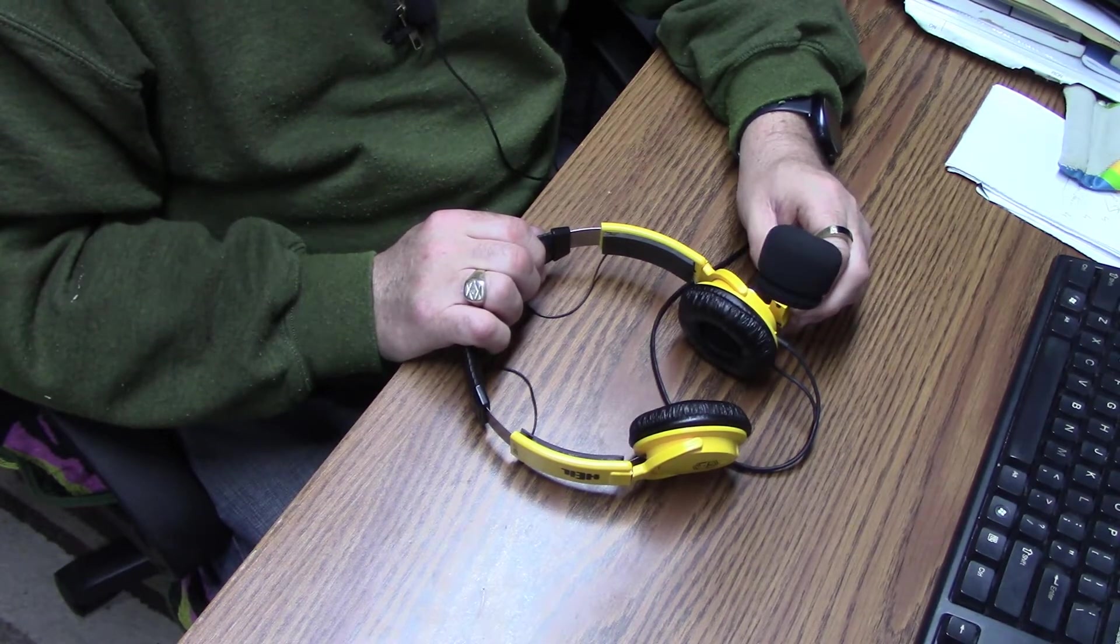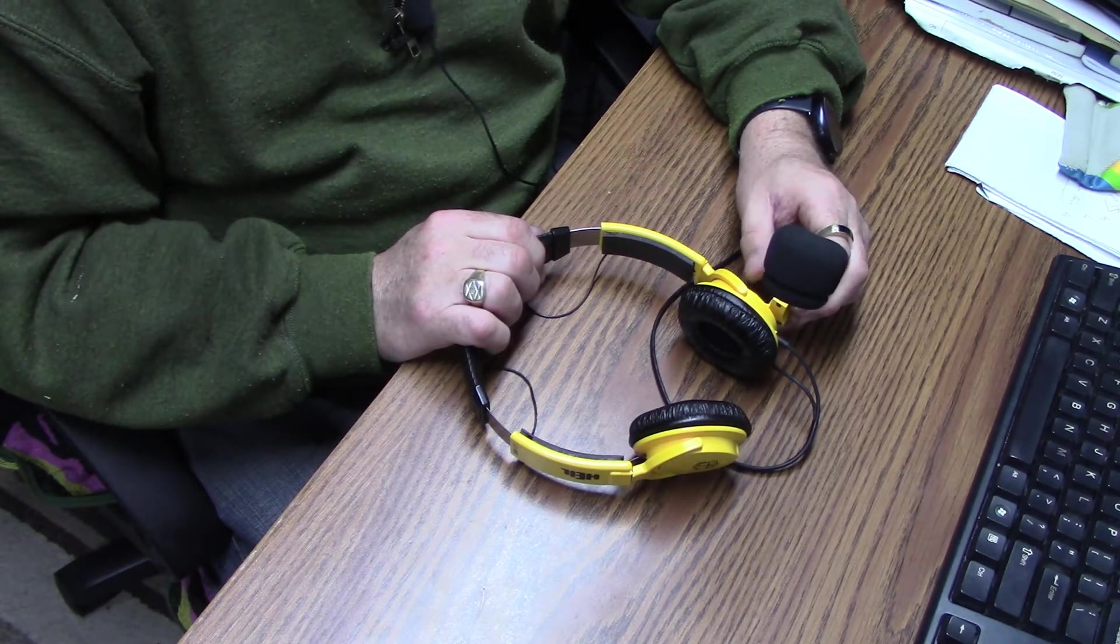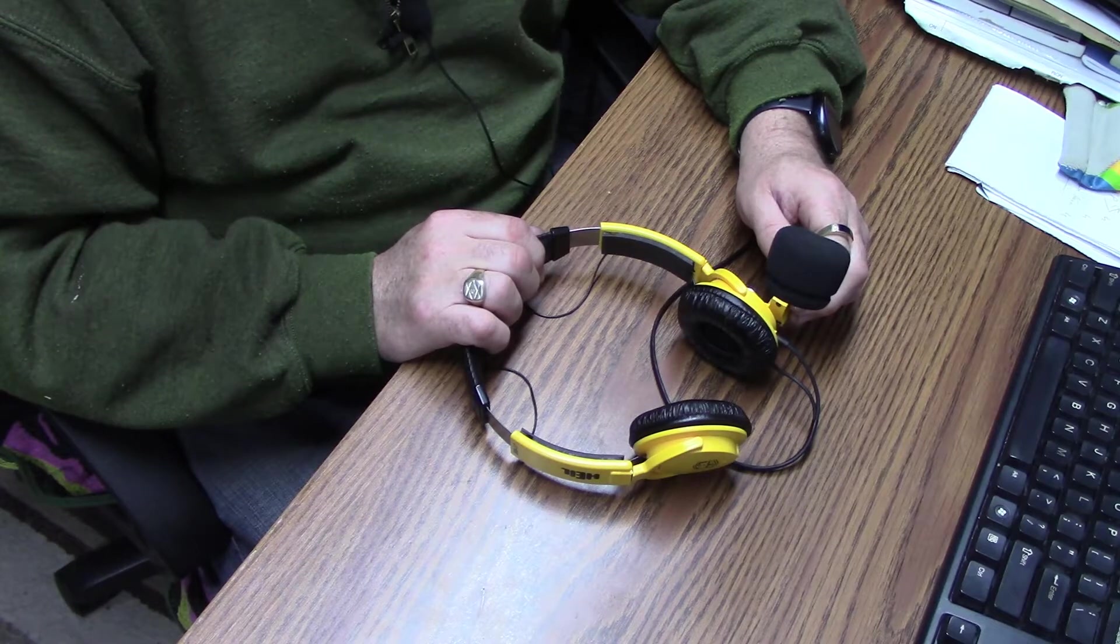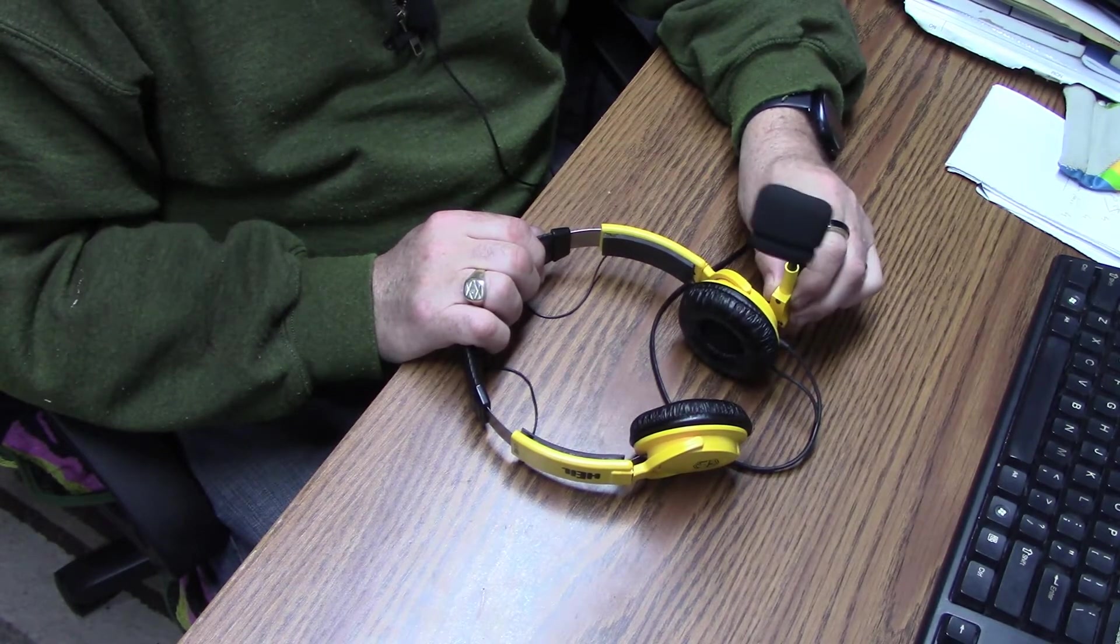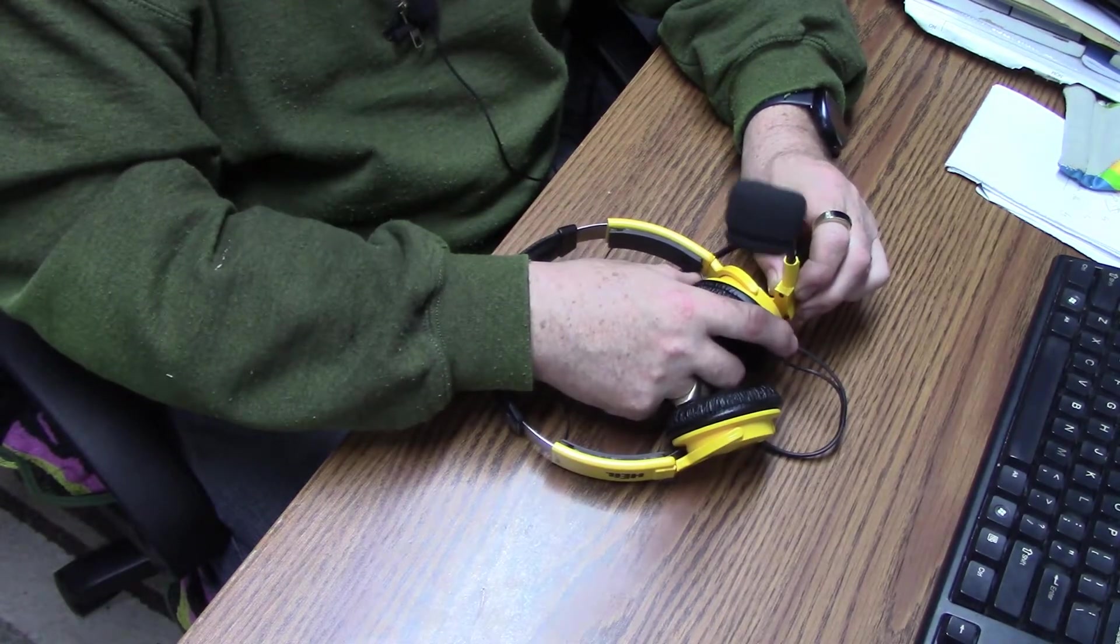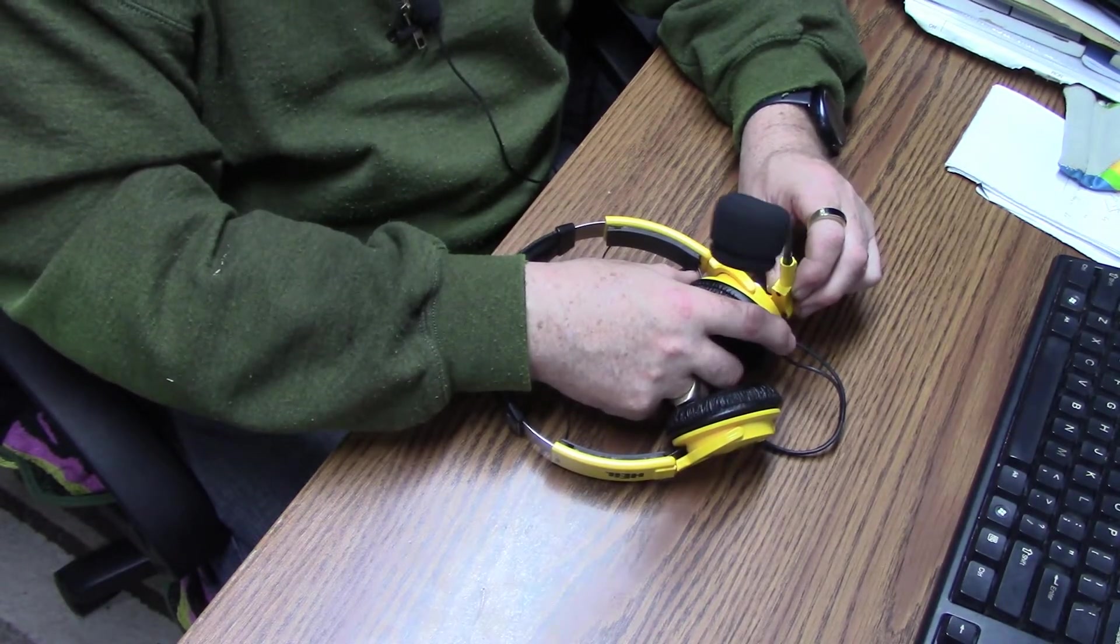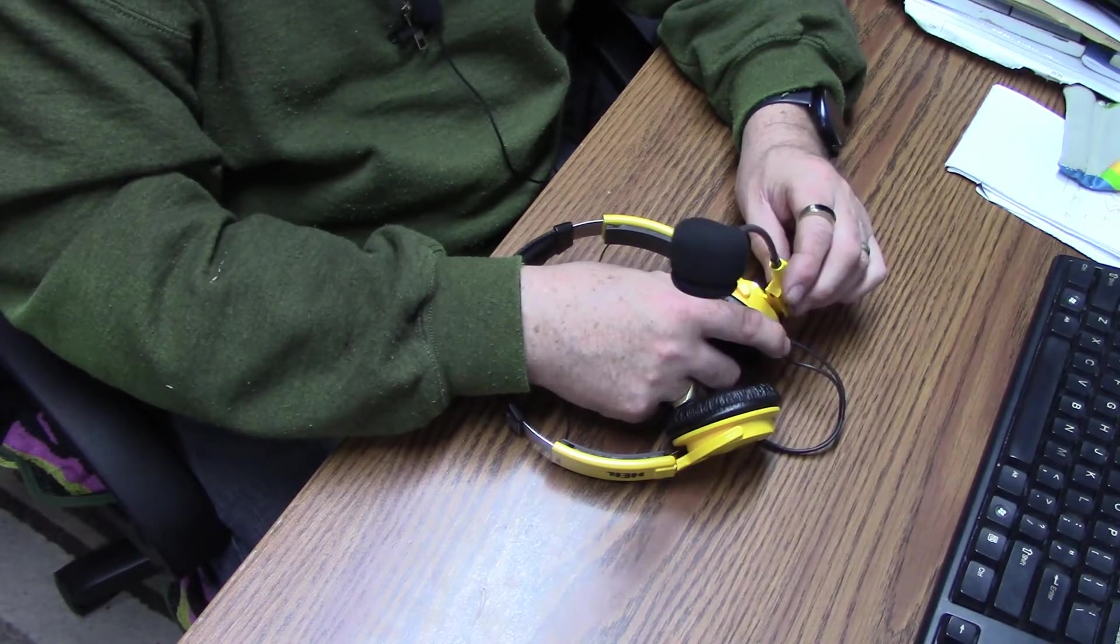But just to clarify, normally the microphone would go to about there and it would hit some kind of a stop, presumably inside the earphone area. And this isn't—it's wobbling around, there's something loose. It could just be a screw, so that's what I'm hoping it is.